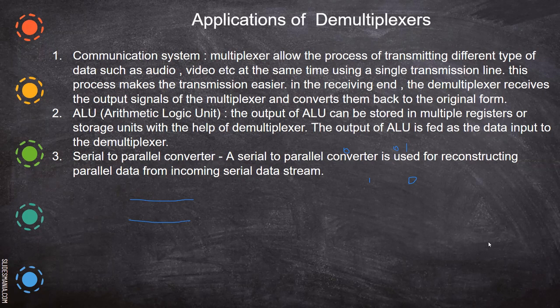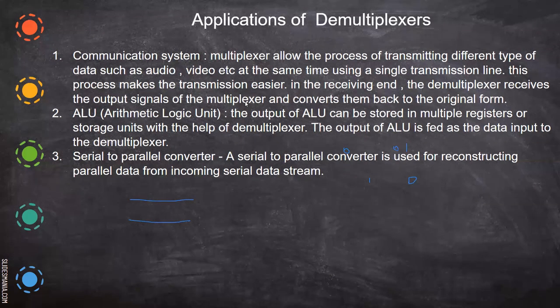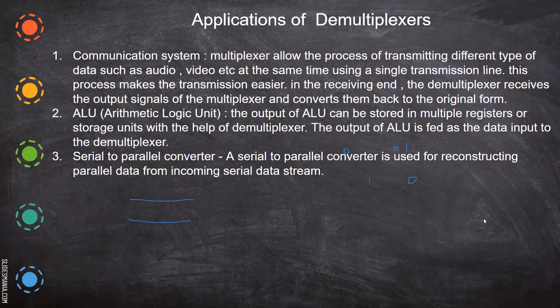But at the receiving end, they have to be separated. That work will be done by the demultiplexer. The demultiplexer receives the output signals of the multiplexer and converts them back to the original form. Multiplexer and demultiplexer work together.